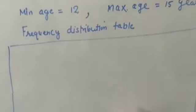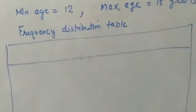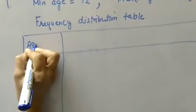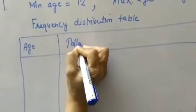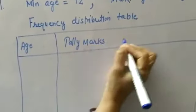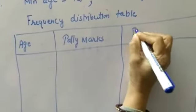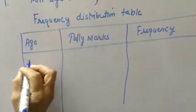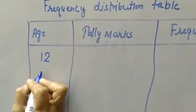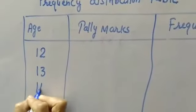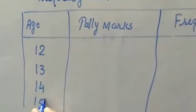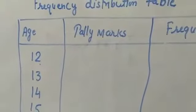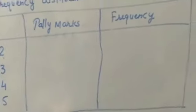Here you can make a table with marks and after that frequency. Here you have minimum value 12, 13, 14, and maximum 15. Then you can count them.